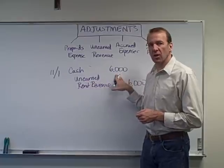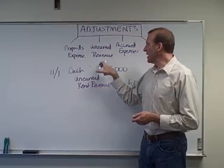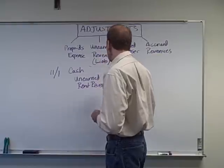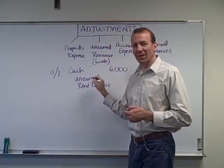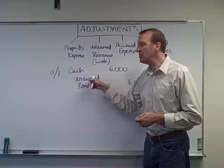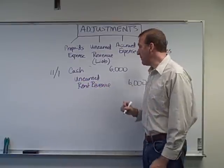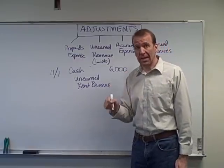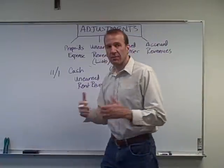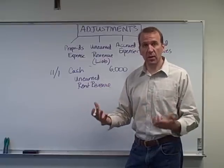We get cash of $6,000, but we're not going to recognize revenue. Revenue is a revenue account, but unearned rent revenue is a liability account. Even though it says revenue, it's a liability because we have not earned it. Revenue is only revenue when it's been earned. This has not been earned and we're using the accrual basis of accounting, so this is a liability because we have to provide this rent space for the person renting from us.